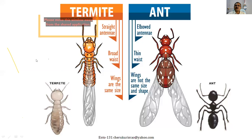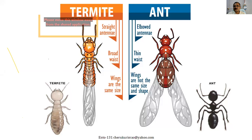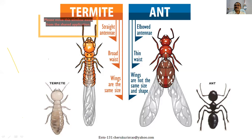Now we will understand the difference between white ants (termites) and true ants. The biggest difference is that the white ant antenna is monoliform, whereas the true ant has an elbow or geniculate antenna. Second, the entire body and abdominal segments in termites are similar and stout, whereas in ants, the first abdominal segment is constricted with a petiole-like structure separating the thoracic and abdominal segments. Third, the wings: in Isoptera, forewings and hindwings are the same size.